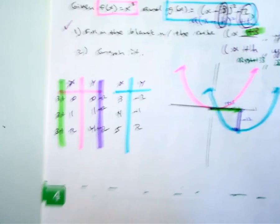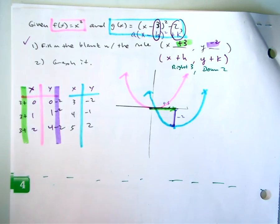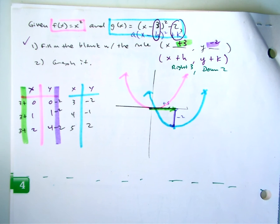So basically all you're doing there is applying a rule and you're basically just translating a function.